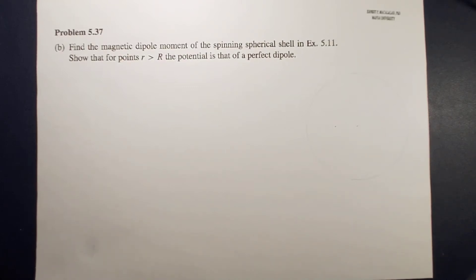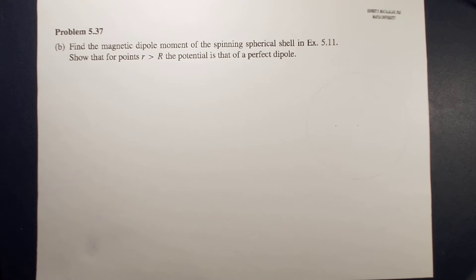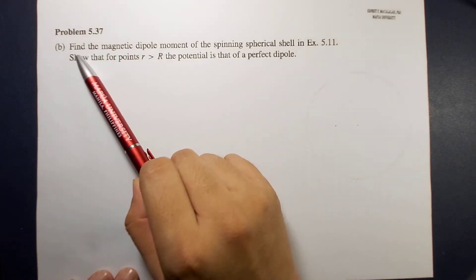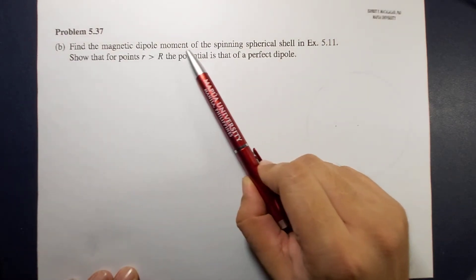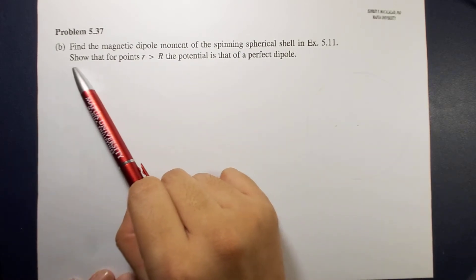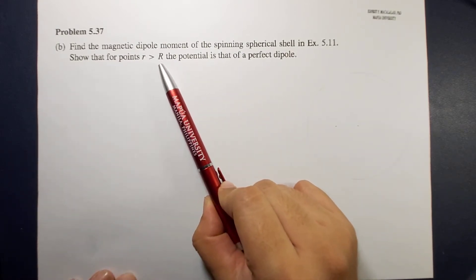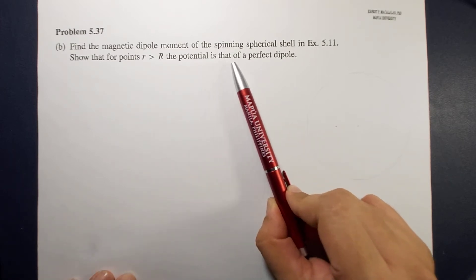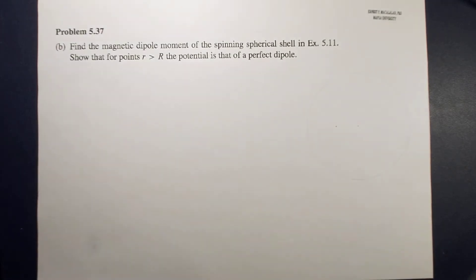Hello guys, it's me again, Sir Ernest, and today we're going to solve a problem involving magnetic dipole moment. The problem reads: find the magnetic dipole moment of a spinning spherical shell, as in example 5.11, and show that for points r greater than R, the potential is that of a perfect dipole.